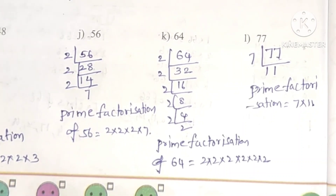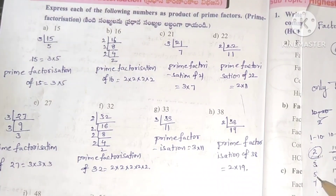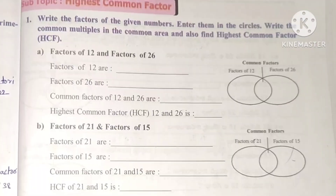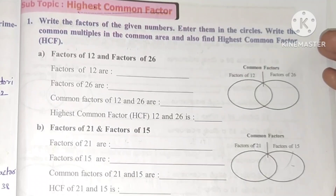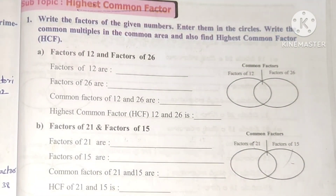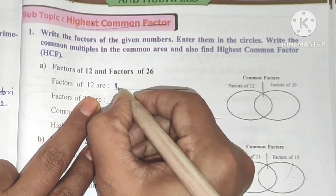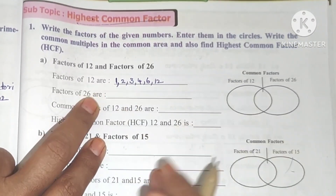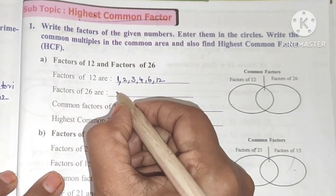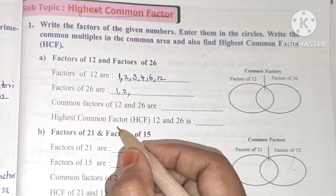Now worksheet 14 — Highest Common Factor. We find the factors of 12 and 26. Factors of 12: 1, 2, 3, 4, 6, 12. For 26, units place 6 is in the 2 table; 2 plus 6 is 8, so not the 3 table. 4 table: 26 divided by 4 is not whole. So factors of 26 are 1, 2, 13, 26.